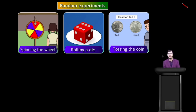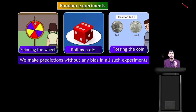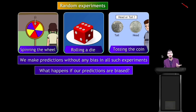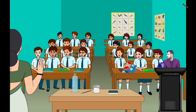Now let us move to another part. We already saw random experiments — spinning the wheel, rolling a die, and tossing the coin. In all three situations, we make predictions without any bias. Now what happens if our predictions are biased? Let us see one situation.